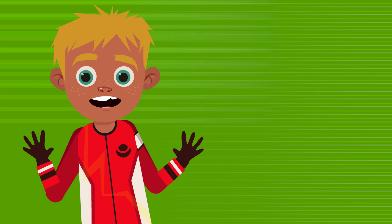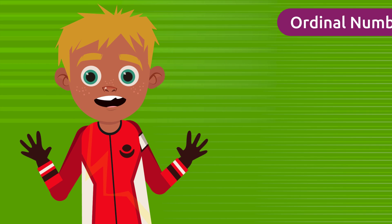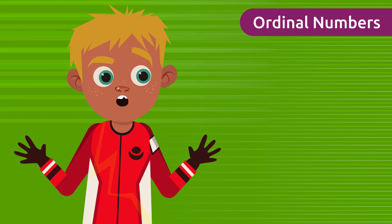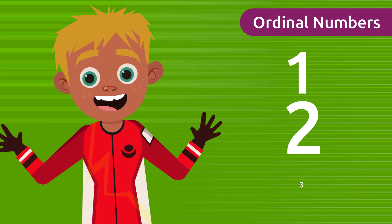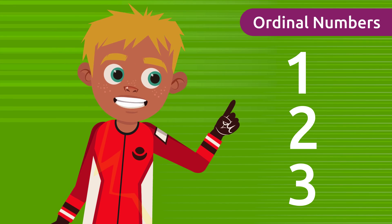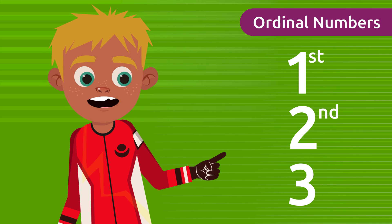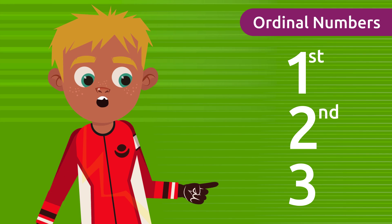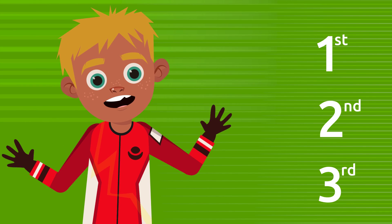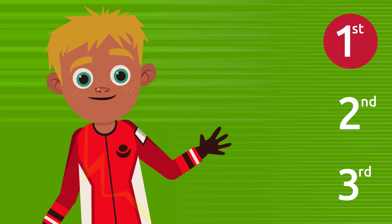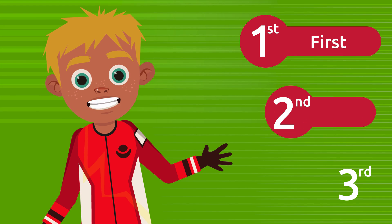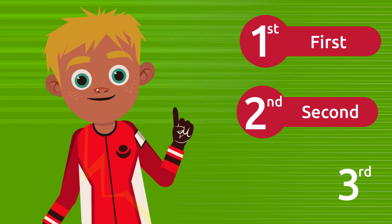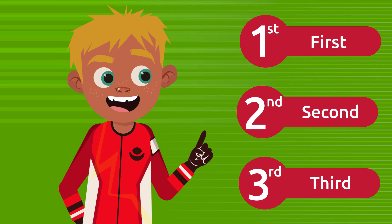As we have seen, ordinal numbers are different from cardinal numbers. If ordinal numbers end in one, two, or three, we use the corresponding suffixes: st, nd, or rd — written small, like this: first, second, third.